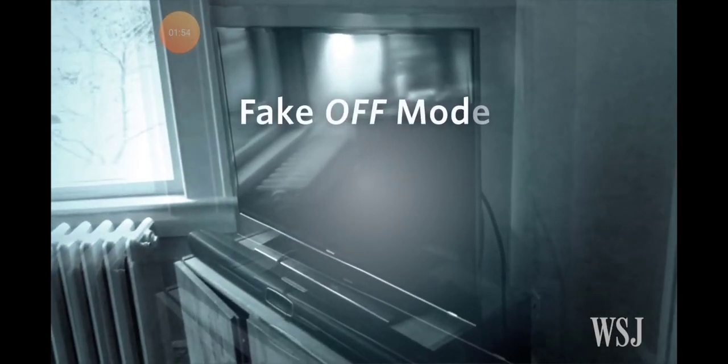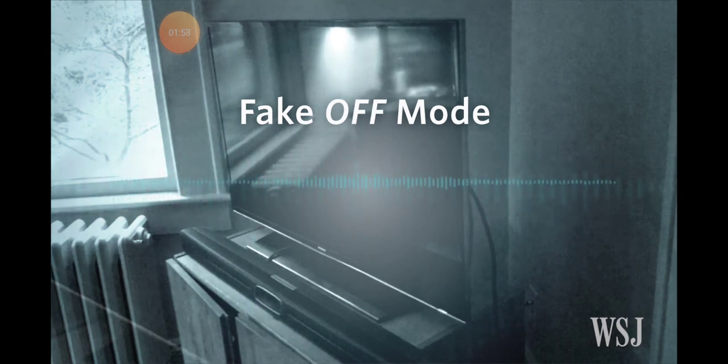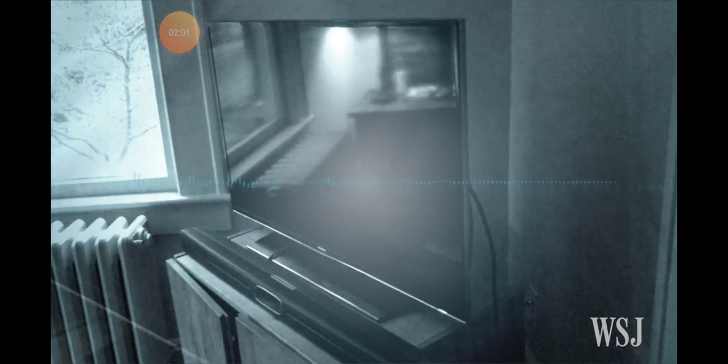Working with British intelligence, the CIA developed an attack that can place Samsung smart TVs in a fake off mode. So while the TV appears turned off, in reality, it's functioning as a bug and recording his conversations in the living room.